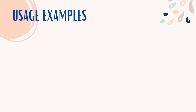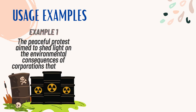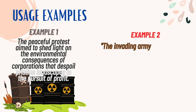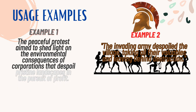Usage Examples. Example 1: The peaceful protest aimed to shed light on the environmental consequences of corporations that despoil pristine landscapes in the pursuit of profit. Example 2: The invading army despoiled the village, taking all their valuables and leaving behind destruction.